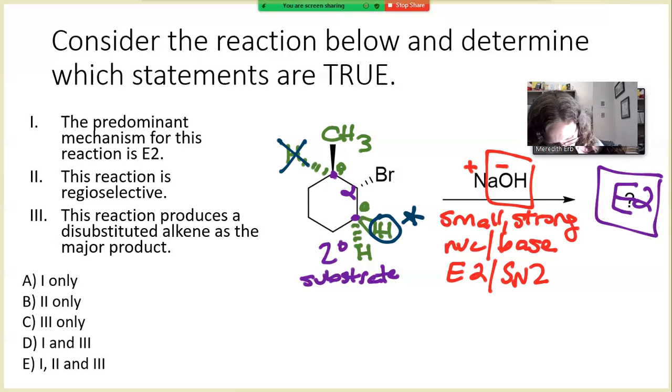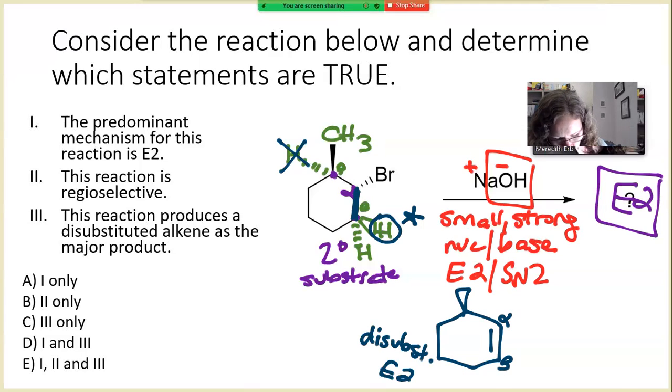Let's take a look at what our only possible alkene product is. The wedged methyl is left alone. It stays as it is on the left-hand side. And then our alkene is going to form between the alpha and the beta bond right here to give us a disubstituted alkene.